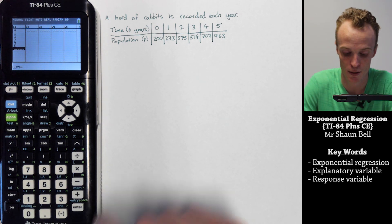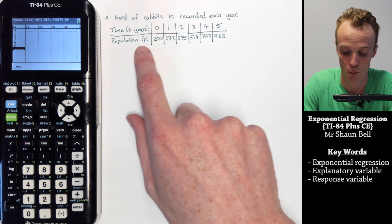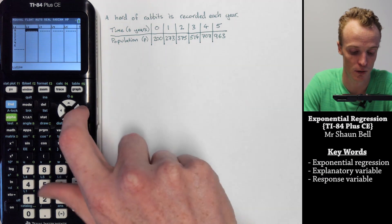We then repeat this with our P values, which is going to be on our Y axis in this calculator, which we enter into list 2.